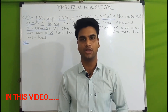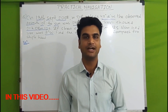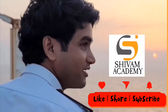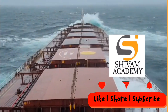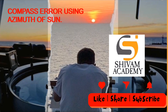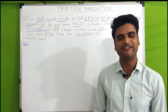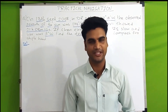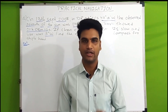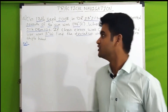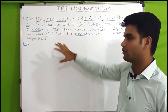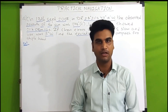Hello everyone. Today we are going to discuss compass error using azimuth of the sun. This is important for all those who are already on board or about to join, because your team officer will definitely ask you to find compass error. We are going to discuss a question from the textbook — a solved example on page 121. After watching this video you can refer your textbook as well for better understanding.